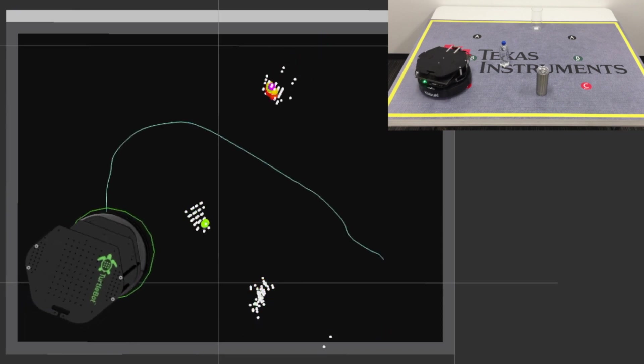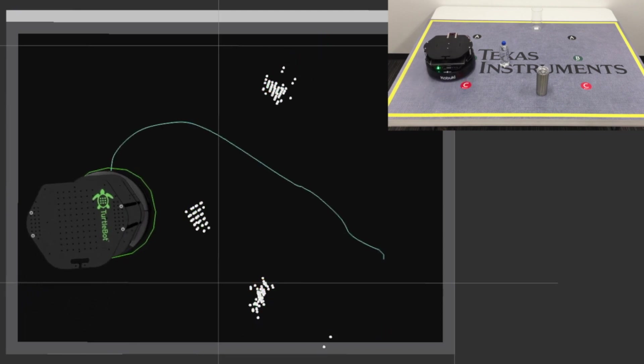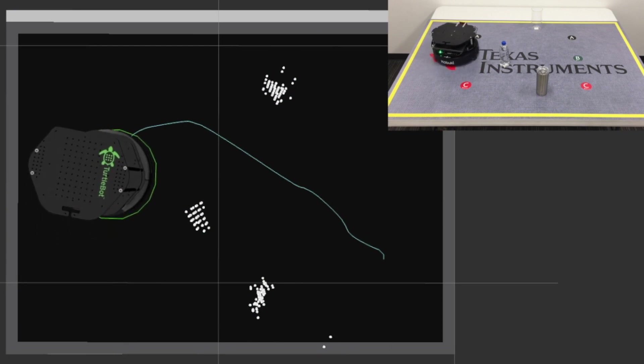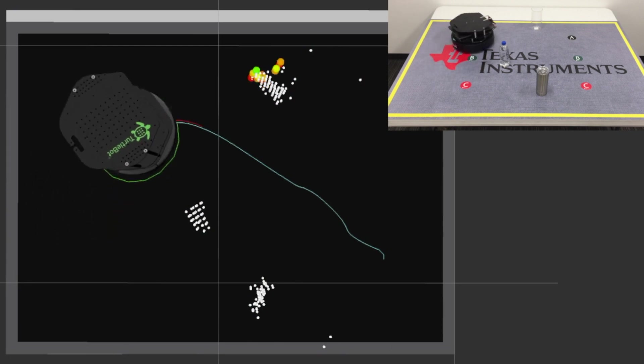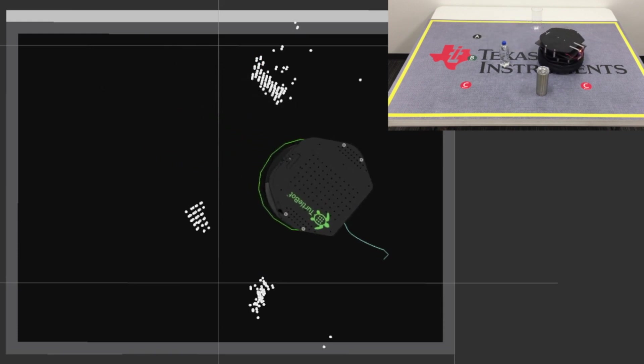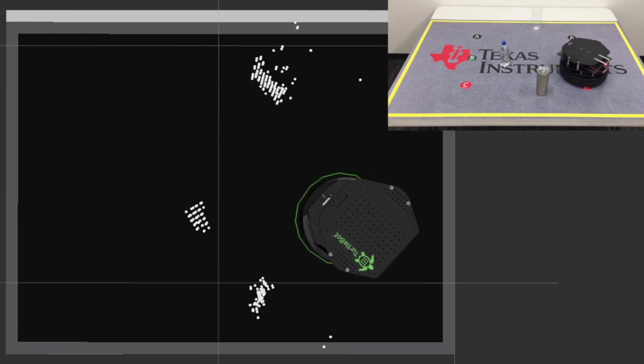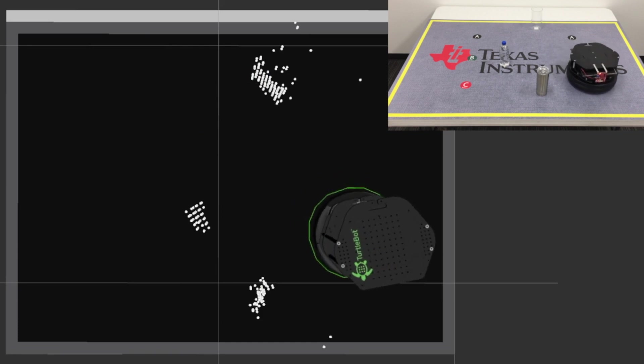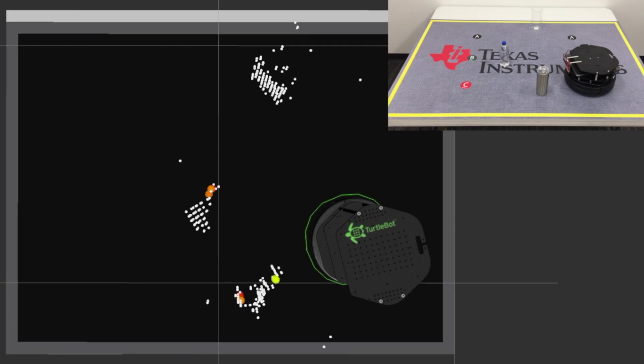ROS uses this point cloud data to detect and avoid obstacles in its path. In this demo, we have placed a variety of glass, water, and metal obstacles in the robot's way as it tries to travel from one end of the table to the other. The millimeter wave sensor provides the position of these objects, which ROS then uses to plan a path to the other side of the table.